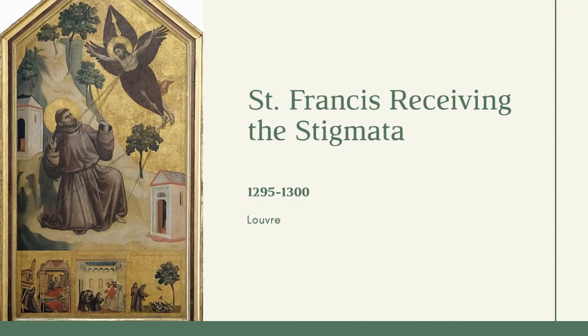The life of St. Francis is perhaps the topic Giotto painted the most works about. This particular painting shows the saint receiving the stigmata — the wounds that Christ endured during the crucifixion. St. Francis was praying for guidance on Mount Alverno when this event occurred, and it literally marked him as blessed. At the bottom of the work there are three major scenes from his life: the dream of Pope Innocent III, the approval of the Franciscan rule, and St. Francis feeding the birds.